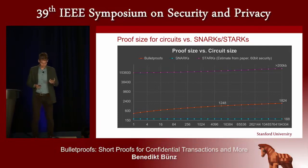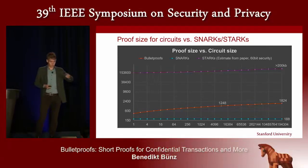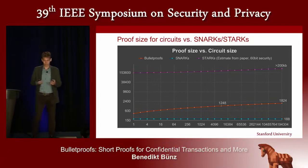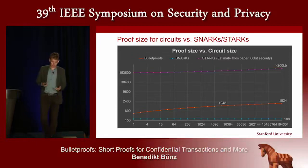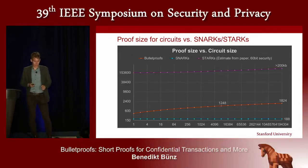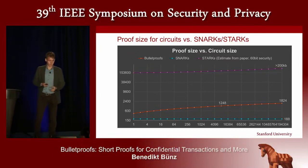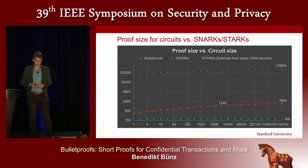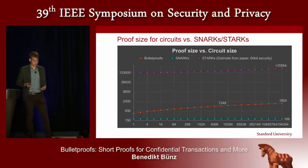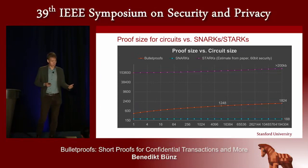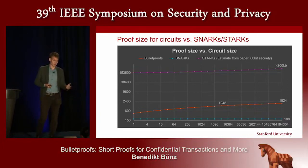Bulletproofs are generally applicable as a general proof system for arithmetic circuits. Compared to SNARKs, the proof sizes are short — constant for SNARKs — but with logarithmic scaling, for most reasonable proof sizes Bulletproofs stay under two kilobytes. In contrast, STARKs also have no trusted setup but produce proofs over 200 kilobytes, even with logarithmic or log-squared scaling.